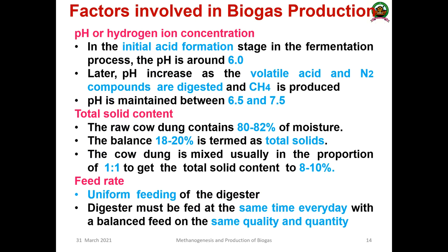Regarding pH: initially, acid formation during hydrolysis and acidogenesis gives a slightly acidic pH. Once methanogenesis begins and volatile acids and nitrogen components are digested to methane, the pH increases to slightly alkaline. The ideal pH is 6.5 to 7.5, where most microorganisms grow optimally. Regarding total solid content: cow dung is a major component in anaerobic digestion, containing 80–82% moisture and 18–20% total solids. It is usually mixed in a 1:1 proportion to achieve 8–10% solid content.